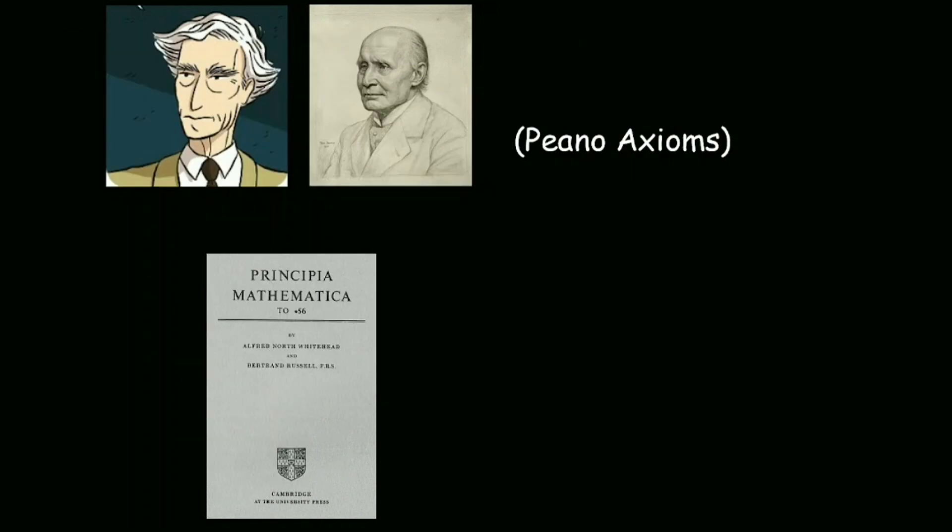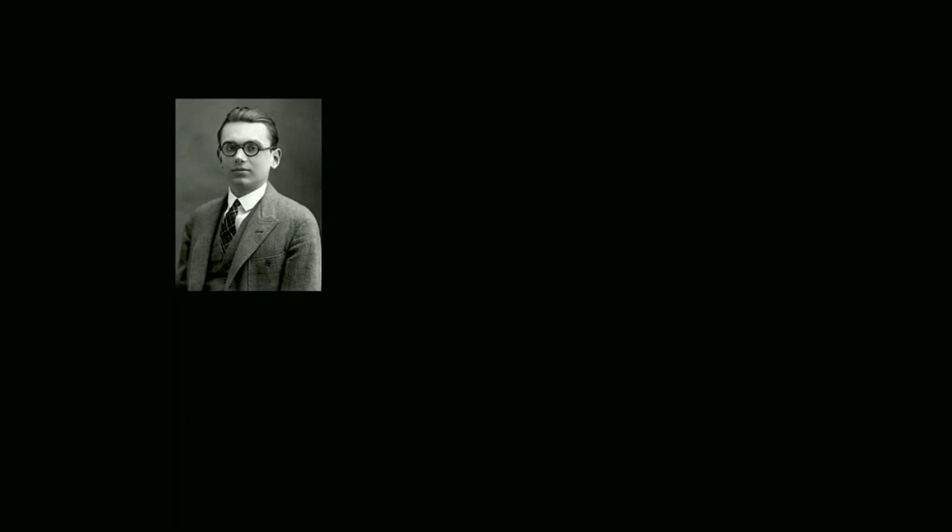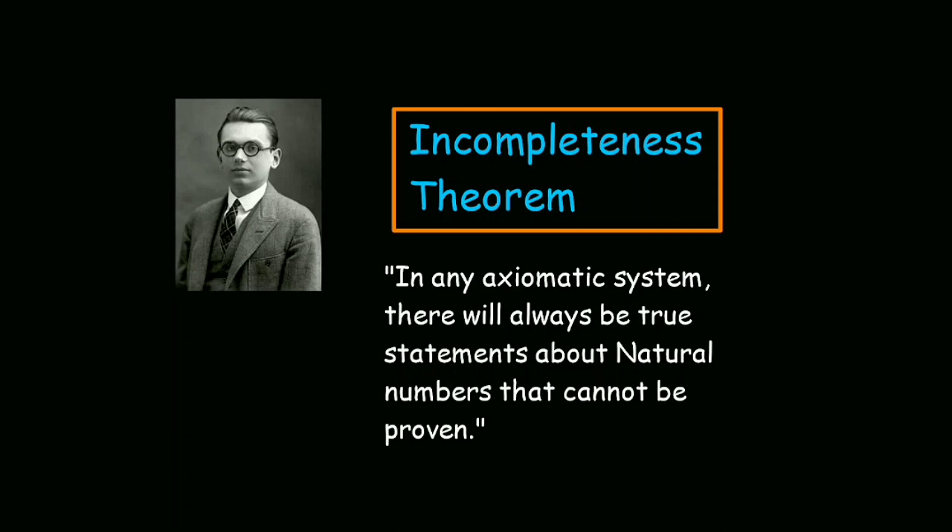Now, to answer the question that we asked earlier, did Russell and Whitehead succeed in establishing mathematics on foundational footing? Well, unfortunately, the answer is no. For example, in 1931, Austrian mathematician Kurt Gödel published his Incompleteness Theorem, which says that in any axiomatic system such as the one in Principia Mathematica, there will always be true statements about natural numbers that cannot be proven. Which was a revolutionary idea, because before that, mathematicians used to think if something in mathematics is true, it would always be possible to prove it. But Gödel showed that is just not the case.